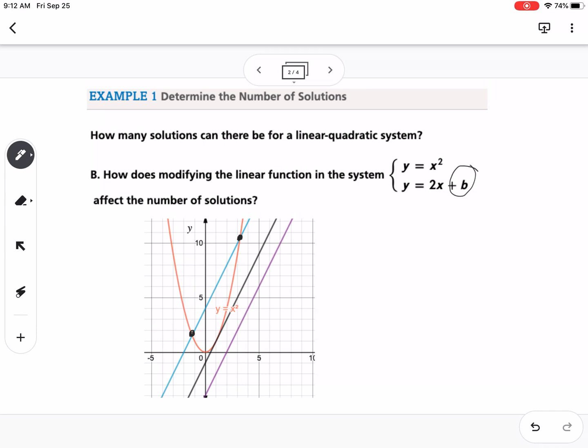If we had our b value is negative one, you can see that this one is crossing in one spot so they're intersecting in one spot so we'd have one solution.